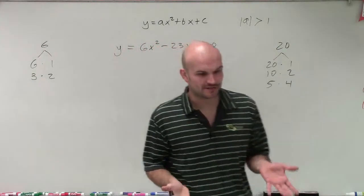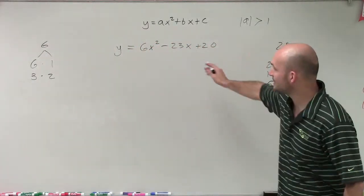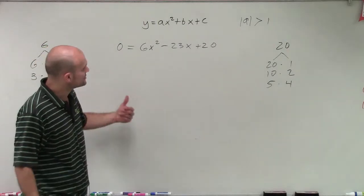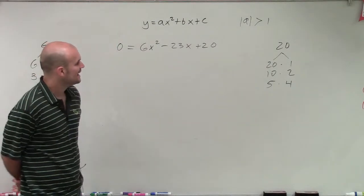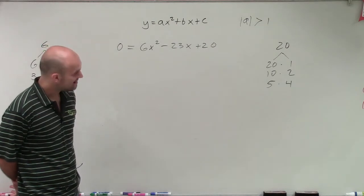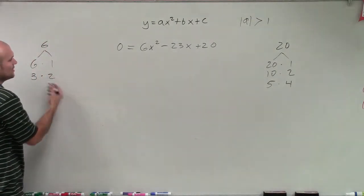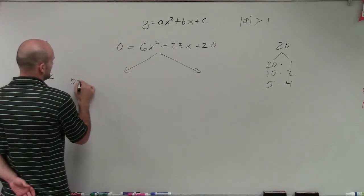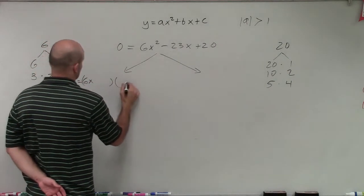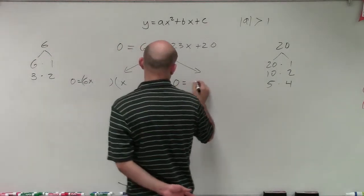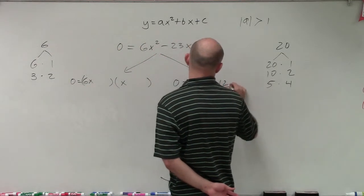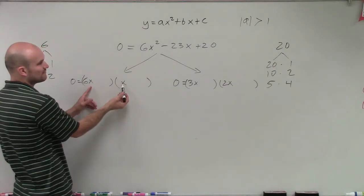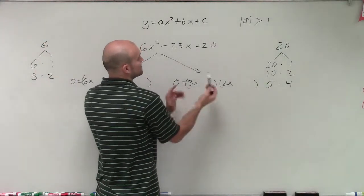Now that I know my factors, I'm going to break this apart into two different problems. Remember, we're trying to solve, so we're going to have our output value equal to 0. I'm going to take a look at how I'm going to factor this into two different sets where a could either be 6 and 1 or 3 and 2. So we'll have 0 equals 6x times x, or we could say 0 equals 3x times 2x. Those are my two different possibilities for a, because both of these, when I multiply the first two terms, give me 6x squared.